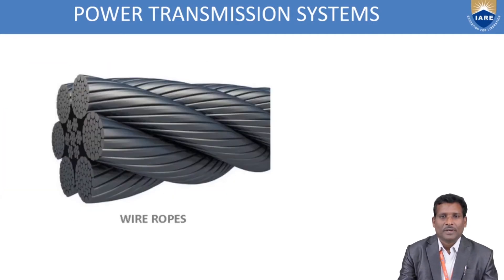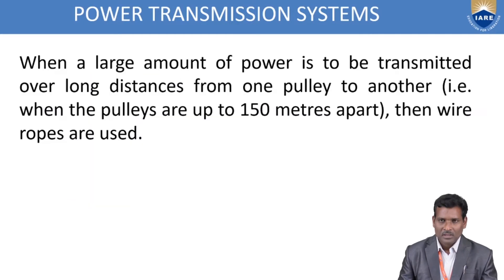The second classification is wire ropes. The detailed construction of wire ropes and classification we will see in the next module. When a large amount of power is to be transmitted over long distances from one pulley to another pulley, up to 150 meters apart, there only wire ropes are used.